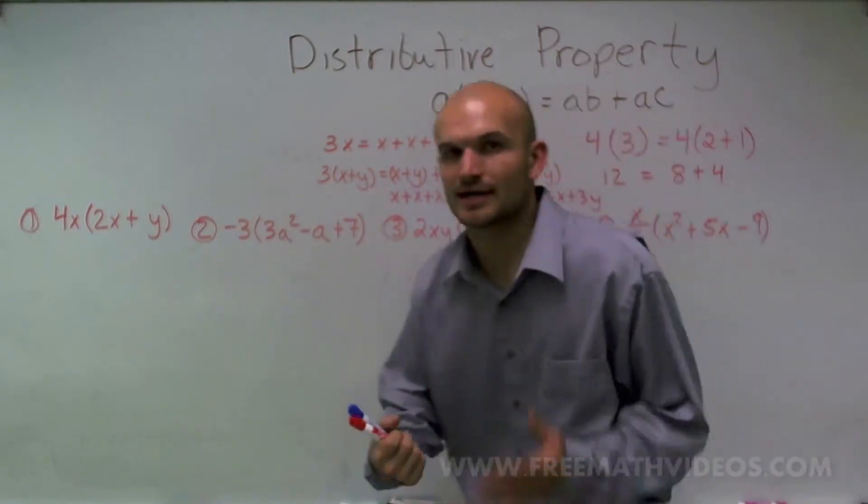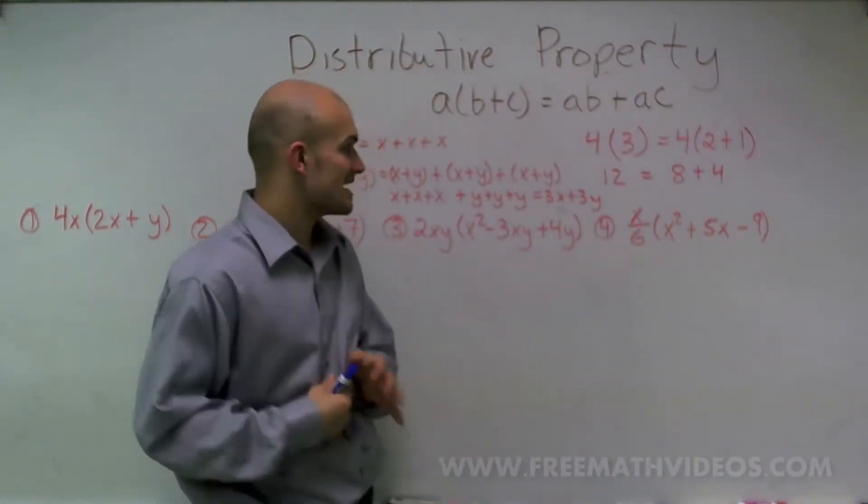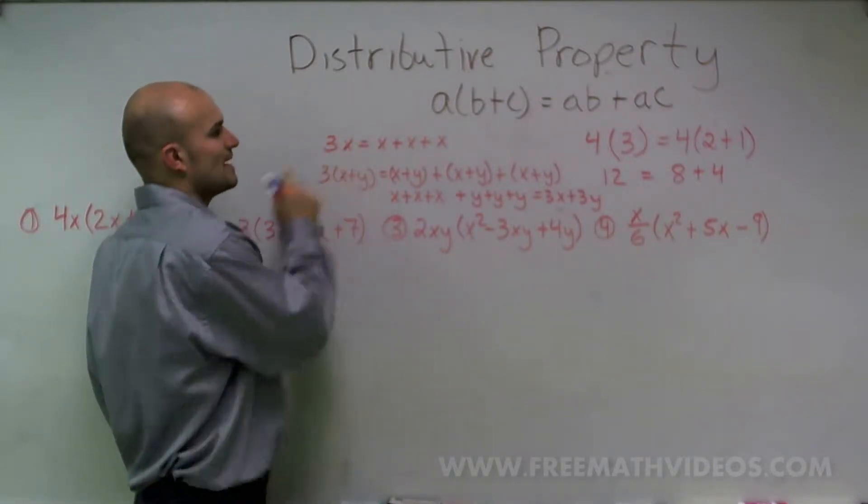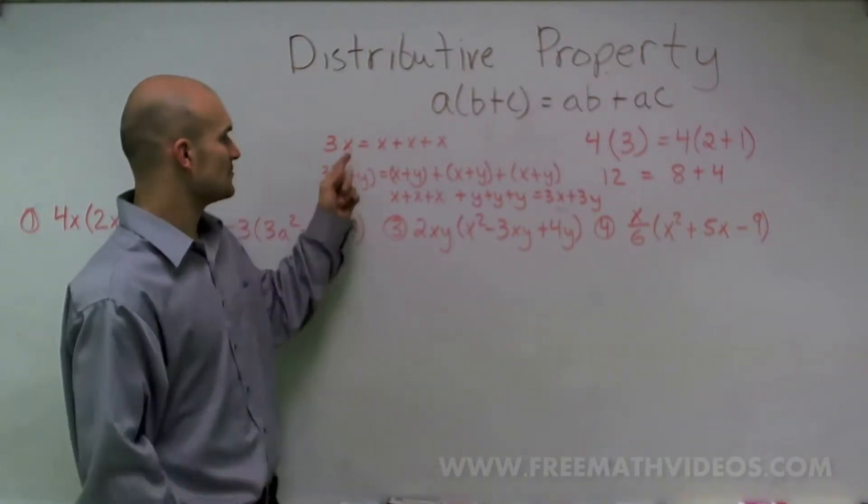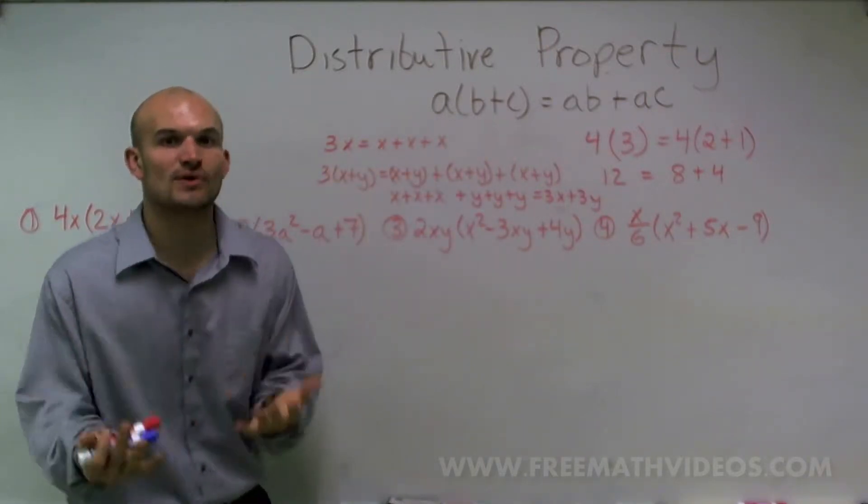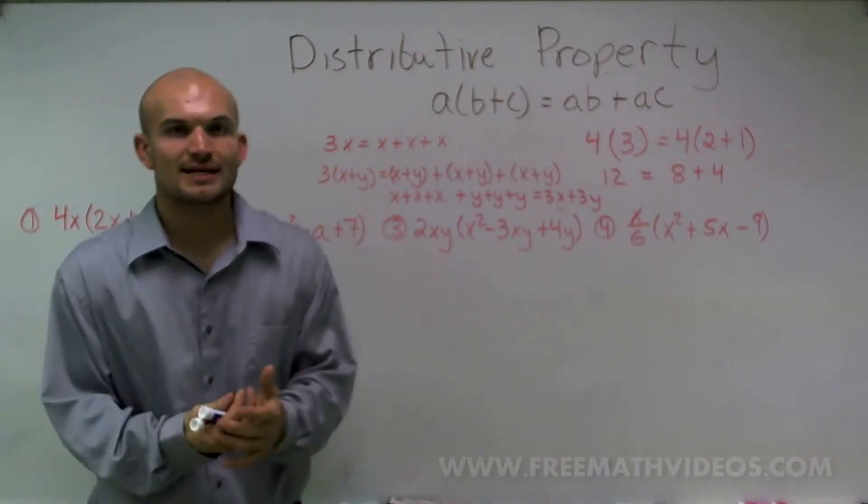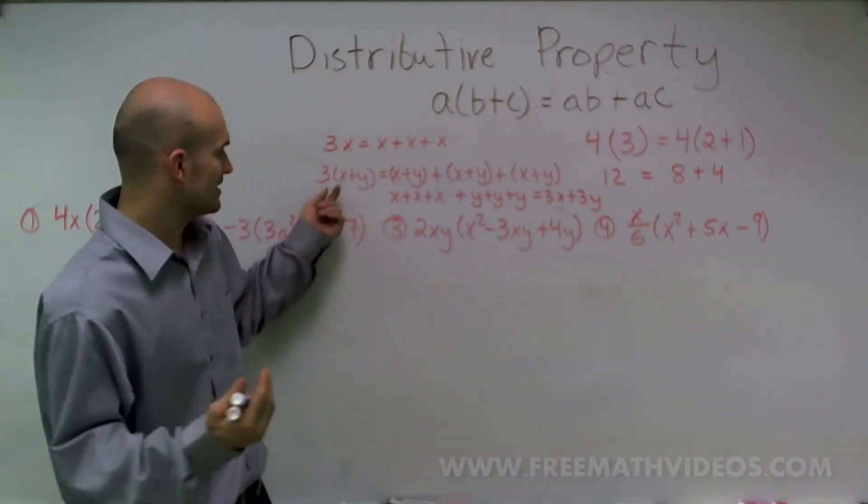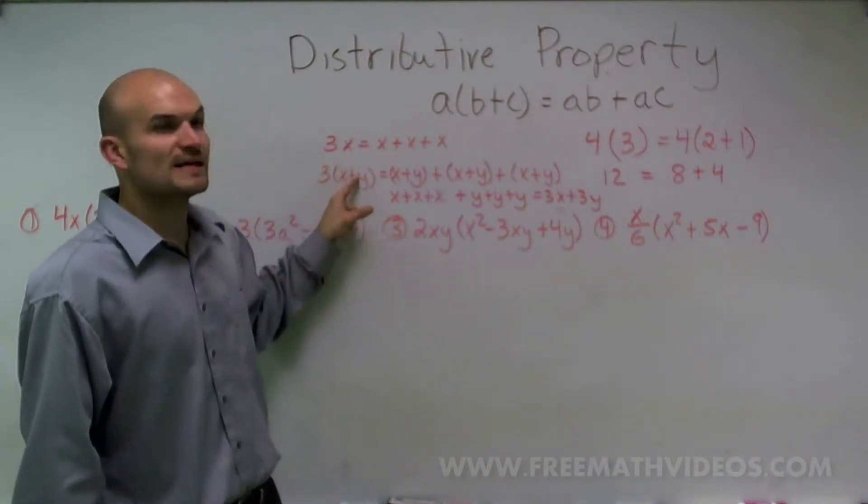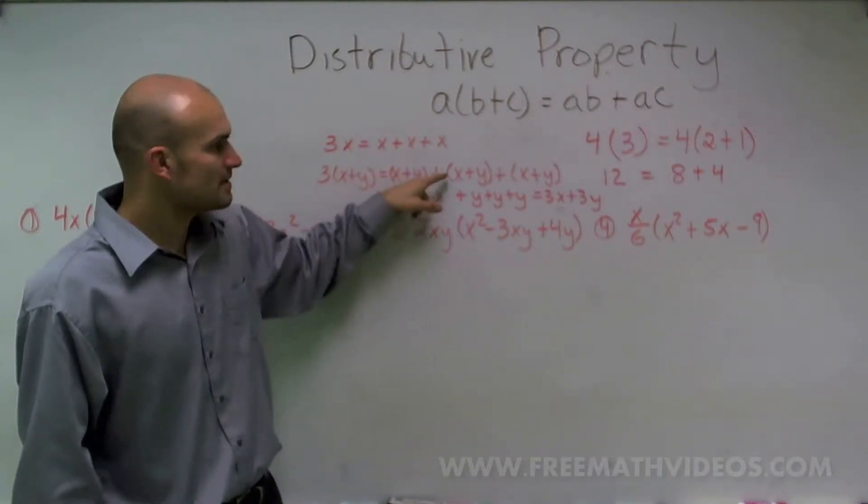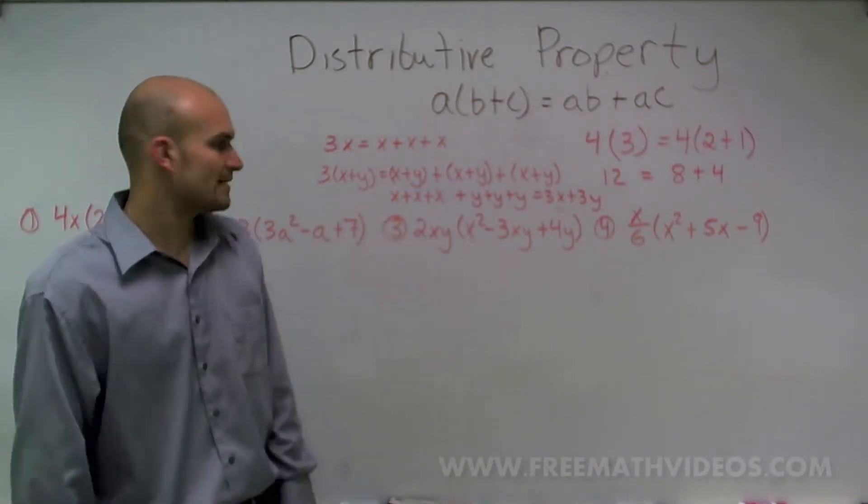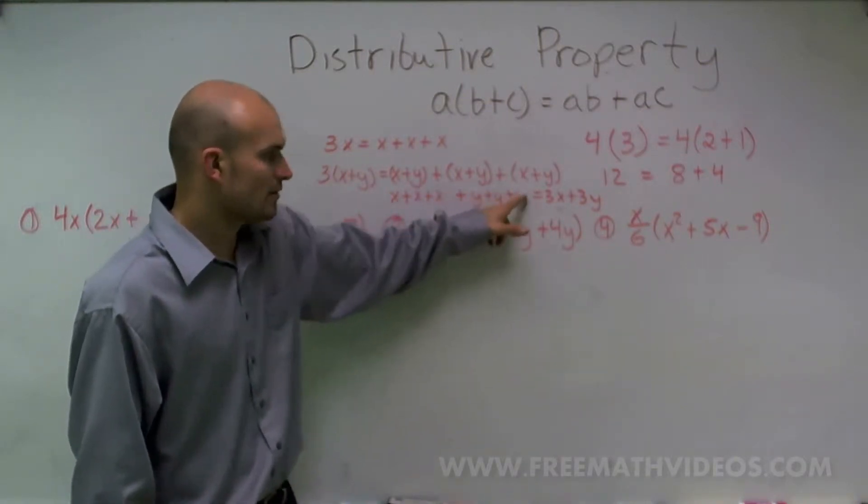So let's take a look at a couple of things I want to review before we actually get into some examples. So if I multiply by a number, 3 times x, remember what that simply states is I'm really saying 3x's, meaning x plus x plus x. Now, if we create parentheses, the reason why we create parentheses is let's say I have a number that I can't simplify, let's say x plus y.